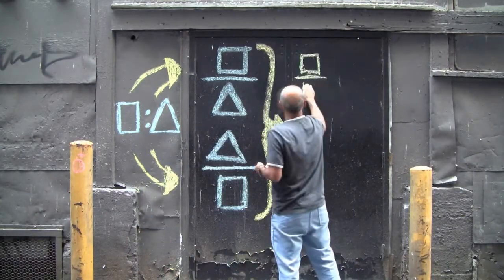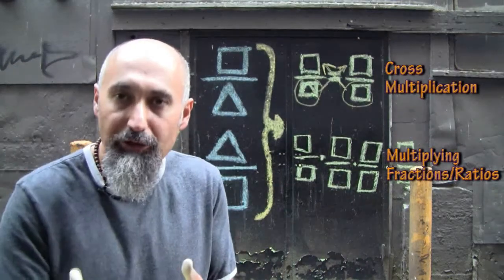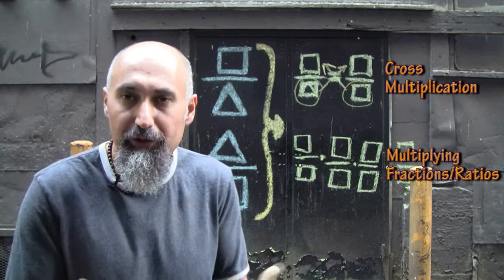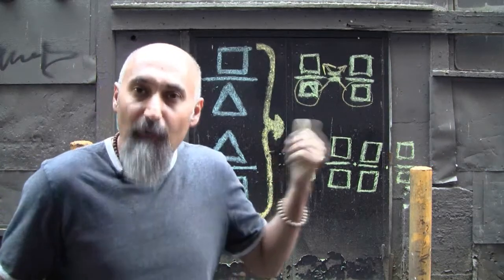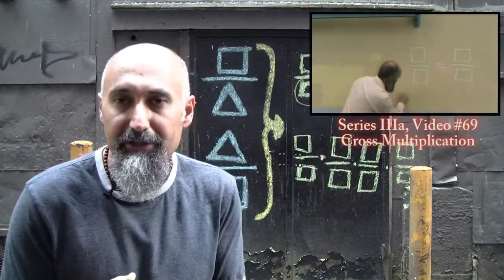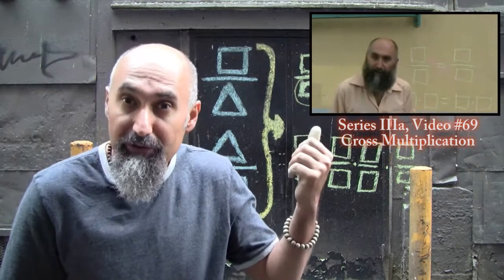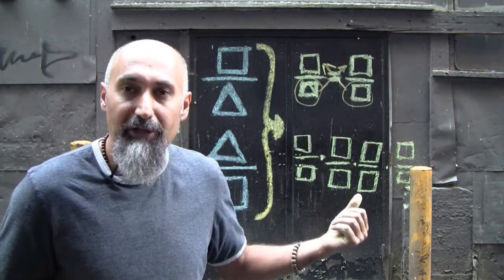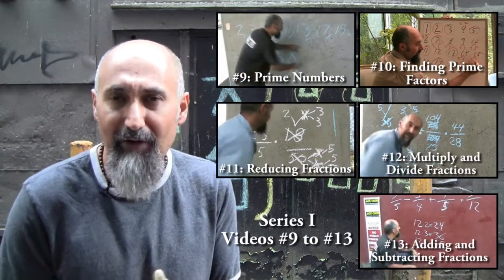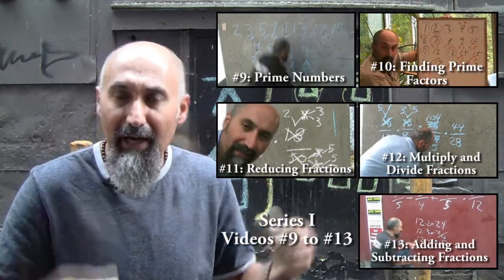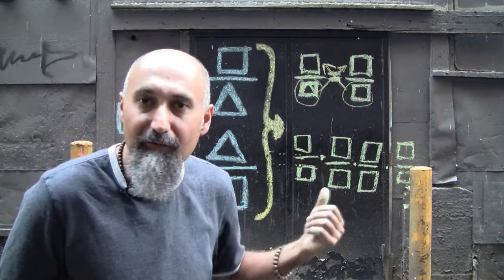So the two methods for unit conversions are: cross multiplication for single-step conversions, and multiplying a series of fractions together for multi-step conversions. Cross multiplication was already covered in Series 3a — it's a short video, super powerful, so learn it. Multiplying fractions was covered in Series 1 — four or five videos on multiplying fractions, adding fractions, and breaking things down to prime factors. The key rule is: anything on top can cancel with anything on the bottom, as long as there are no plus or minus signs between them.